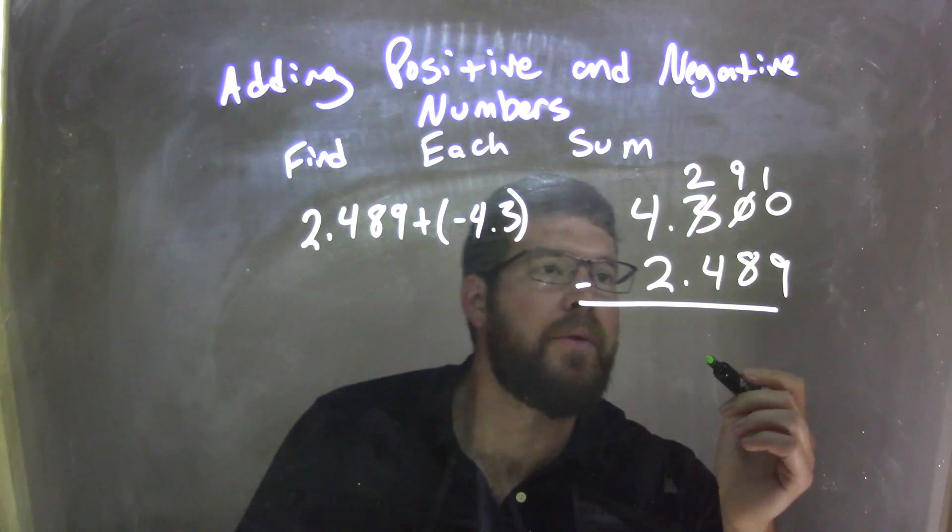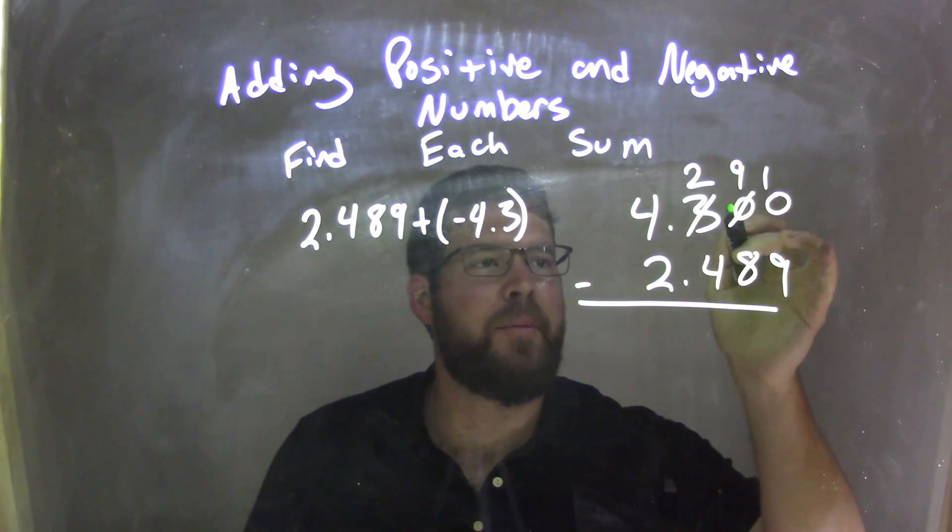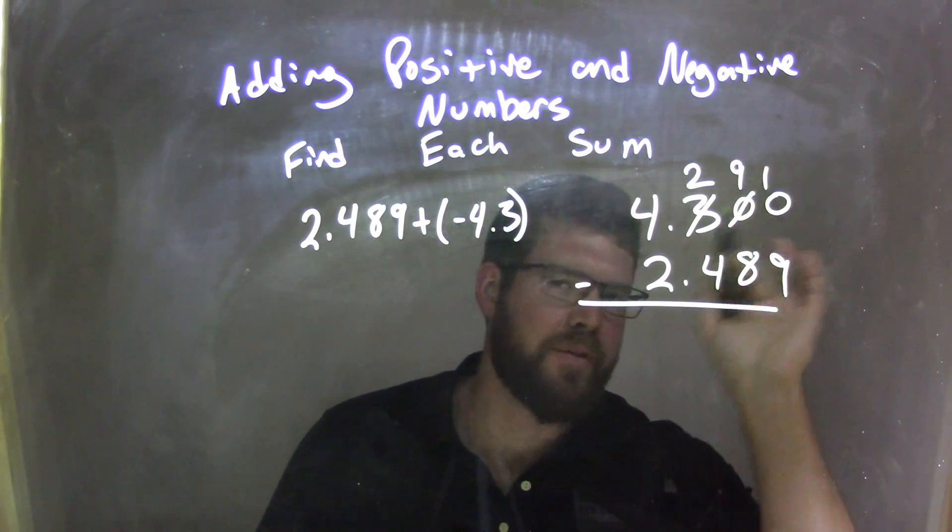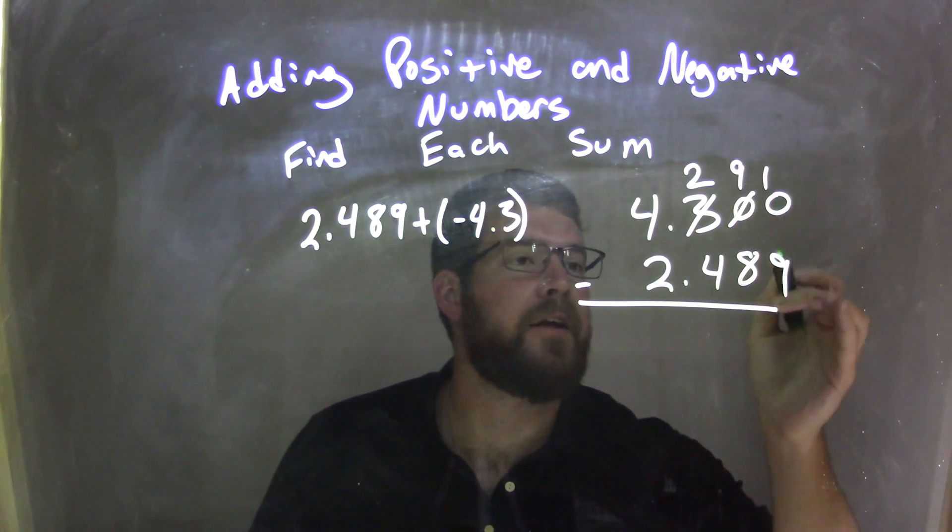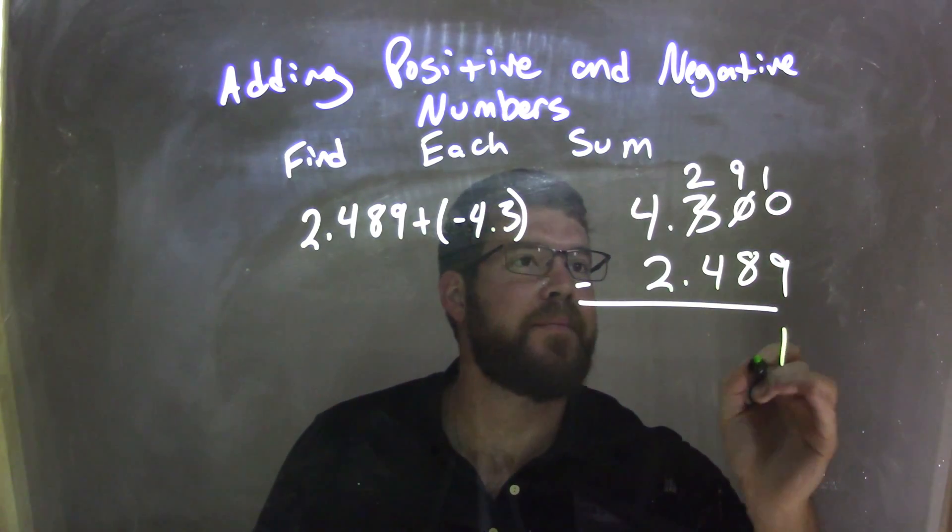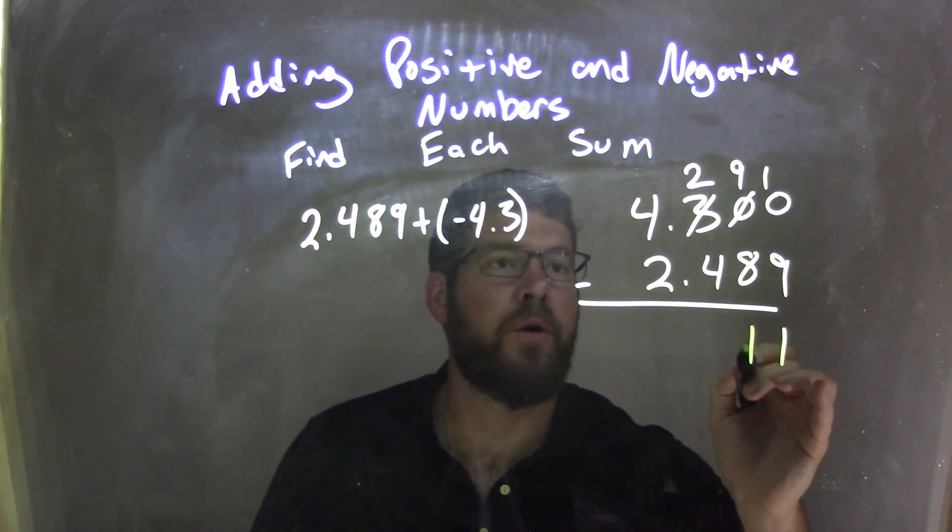And so now, the reason I made it a 10 and then bring 1 over - but anyway, 10 minus 9 is just 1. 9 minus 8 is also 1.